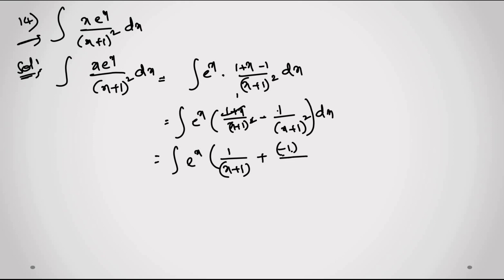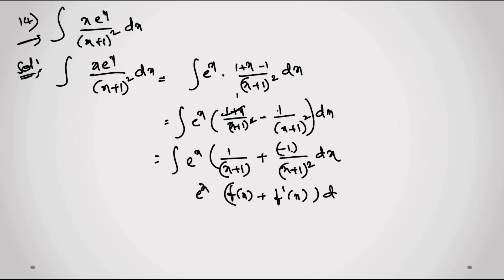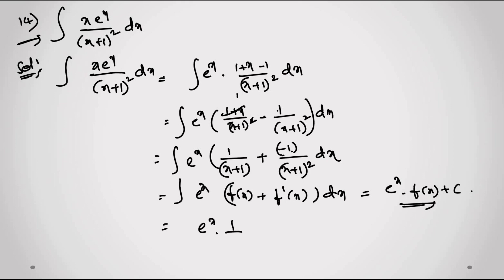Then I take minus one to the numerator, and it becomes minus one divided by (x+1)² dx. This is of the form e^x·[f(x) + f'(x)] dx, which equals e^x·f(x) + c. So f(x) = 1/(x+1), and the answer is e^x·[1/(x+1)] + c. This is the 14th question.